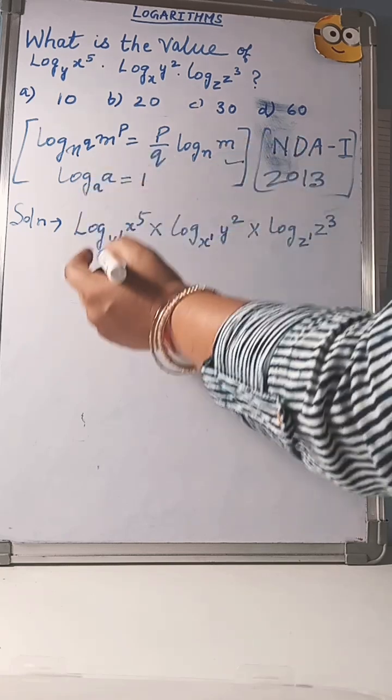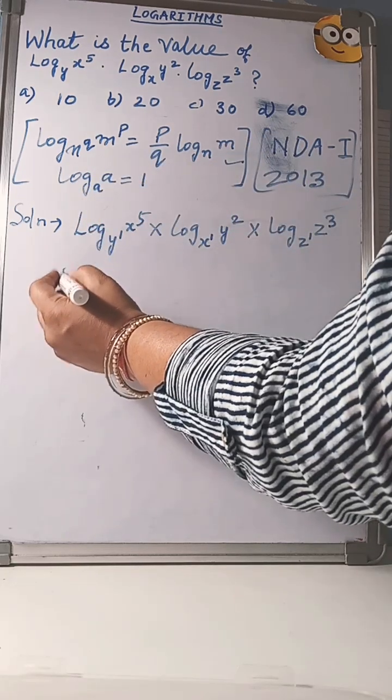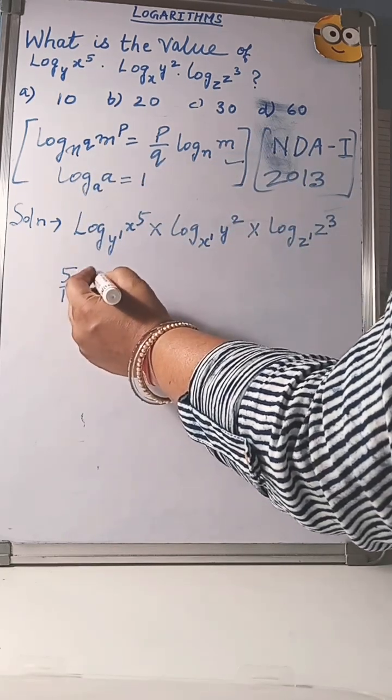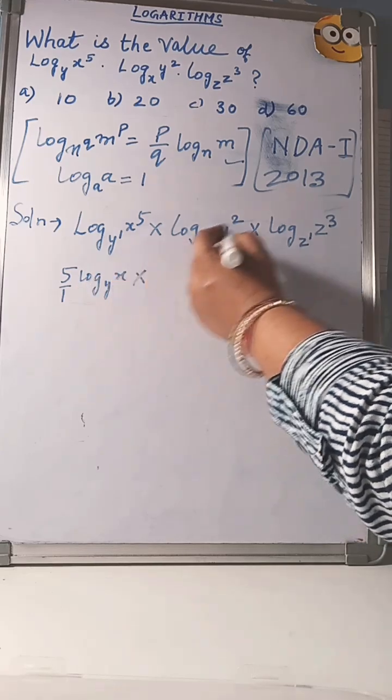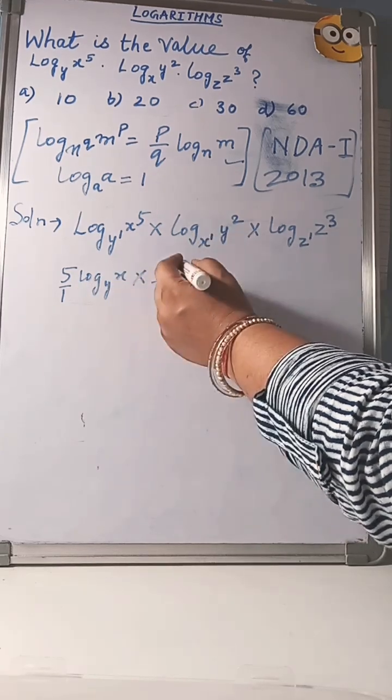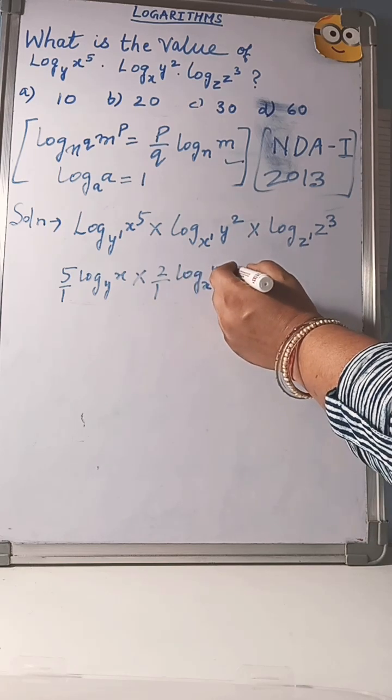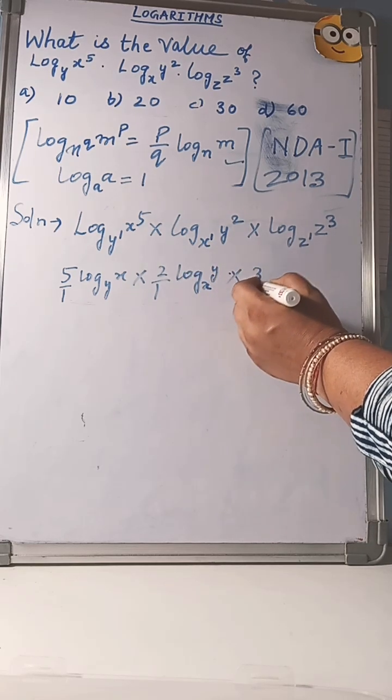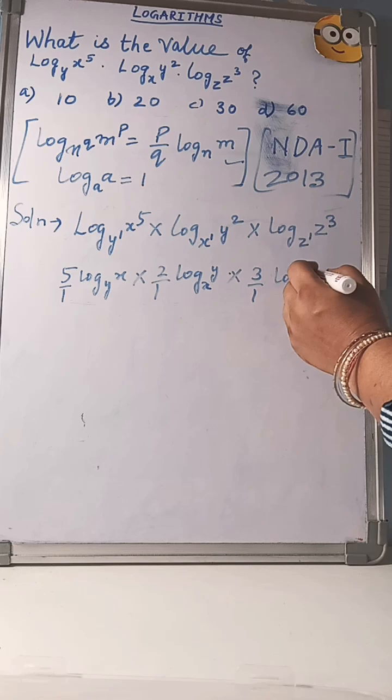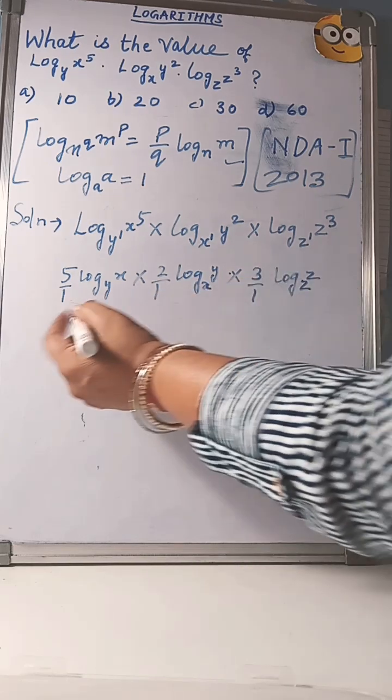So using this property, 5 by 1 log x to base y into 2 by 1 log y to base x into 3 by 1 log z to base z.